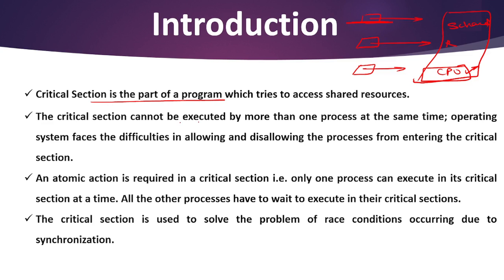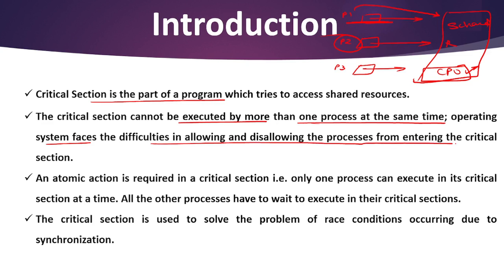The critical section cannot be executed by more than one process at a time. When process P1 is in its critical section, process P2 or P3 is not allowed to enter their critical section. Only one process at a time can enter or execute the critical section. The operating system faces difficulty in allowing and disallowing processes from entering the critical section — that is why it is called the critical section problem.